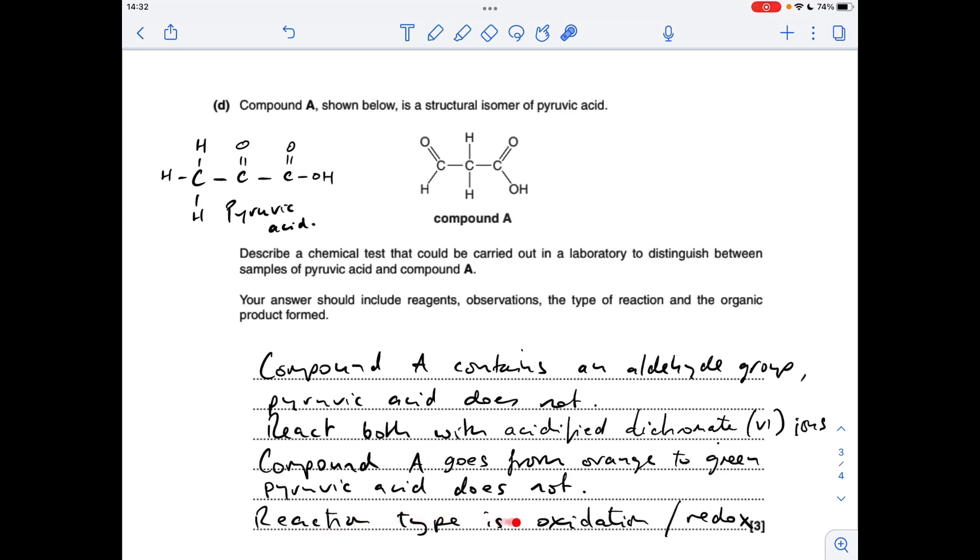The reaction type is still oxidation. Aldehyde going to carboxylic acid is an oxidation process. The reduction process is the chromium in the dichromate 6 ion. You've got chromium in its plus 6 oxidation state here. It's reduced down to the plus 3 state, which is the reason for this green colour being formed.